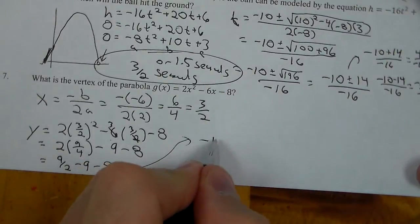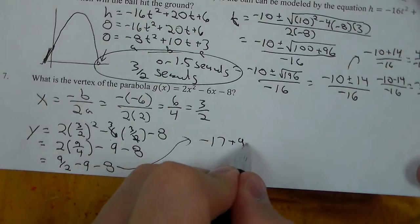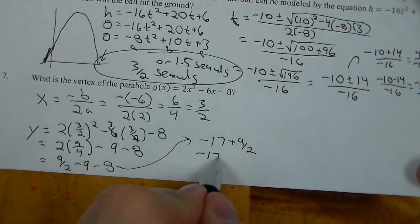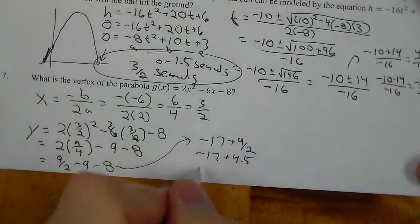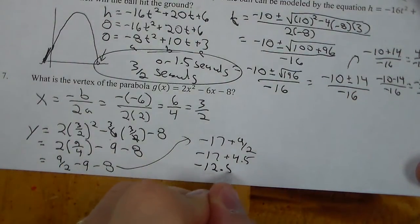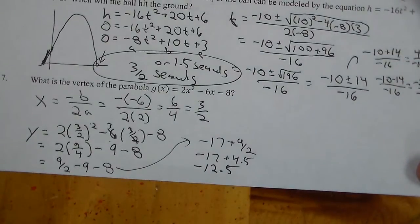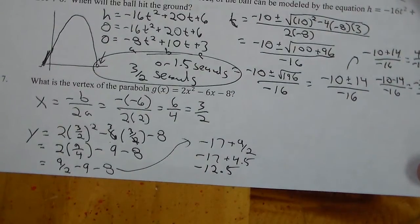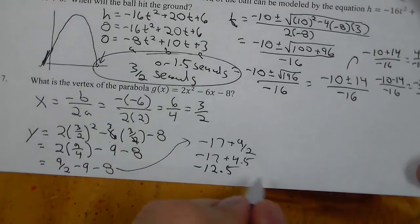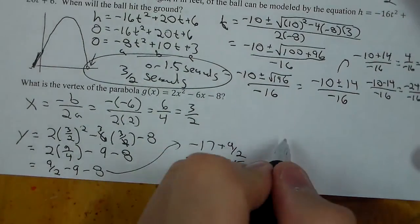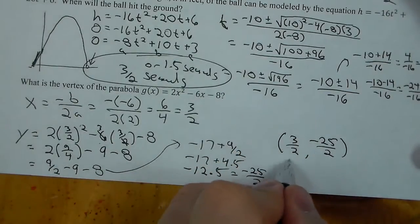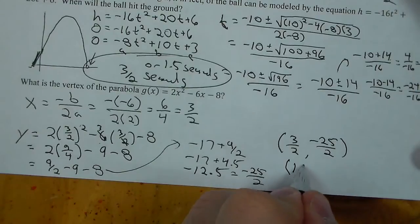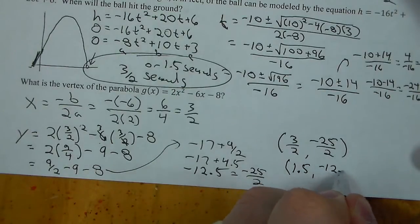So we now have 9 over 2 minus 9 minus 8. Together, negative 17 and positive 9 over 2. If we use decimals: negative 17 and 4.5 gives us negative 12.5. You could also convert to fractions: 34 over 2 minus 9 over 2 gives you 25 over 2. So our vertex coordinate is 3 over 2, negative 25 over 2 — or written as decimals, 1.5 and negative 12.5.